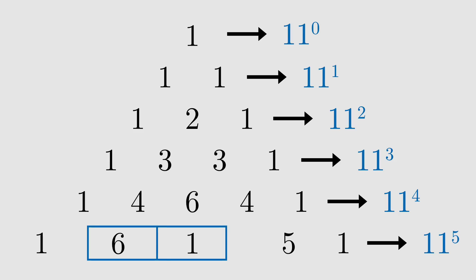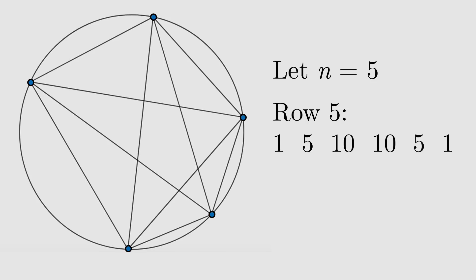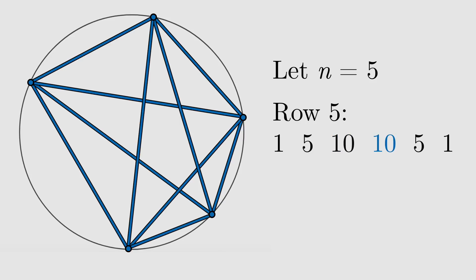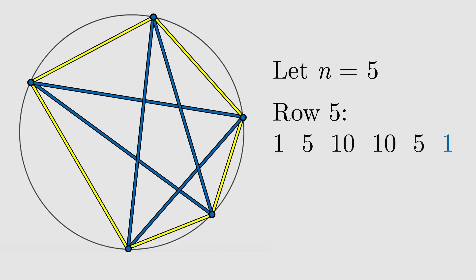This pattern continues to work after two-digit numbers show up if we take the excess digits and carry them to the preceding digits. For the third fact, imagine a circle with n points on it and lines connecting each pair of points. If you find row n in Pascal's triangle, the second number corresponds to the number of points on the circle, the third number corresponds to the number of segments, the fourth to the number of triangles, the fifth to the number of quadrilaterals, and so on until you reach the maximum number of sides.